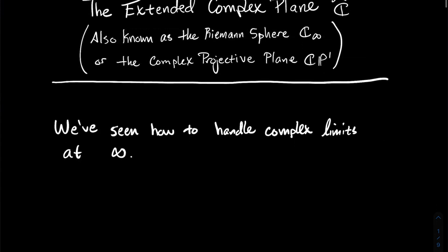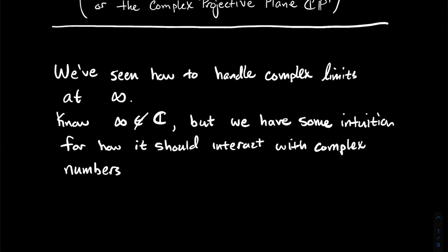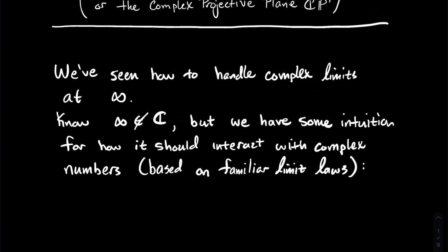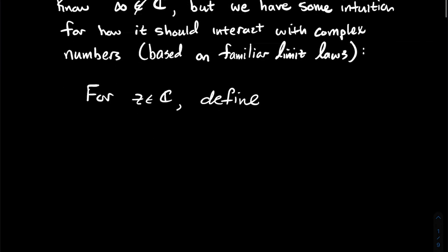We've seen how to handle complex limits at infinity in a previous video, but infinity is not a complex number. We should still have some intuition for how it should interact with complex numbers, and we're going to base that intuition off of familiar ideas with limits. So for complex numbers z, let's define: infinity plus z, in either order, ought to just give you infinity.